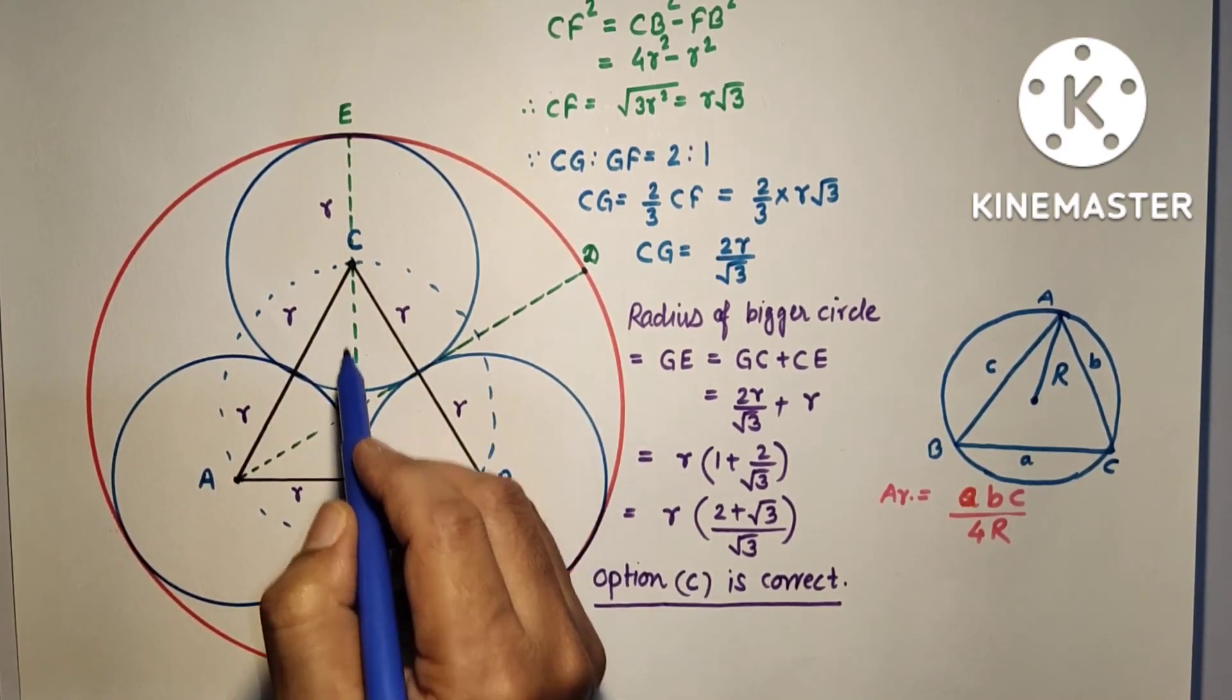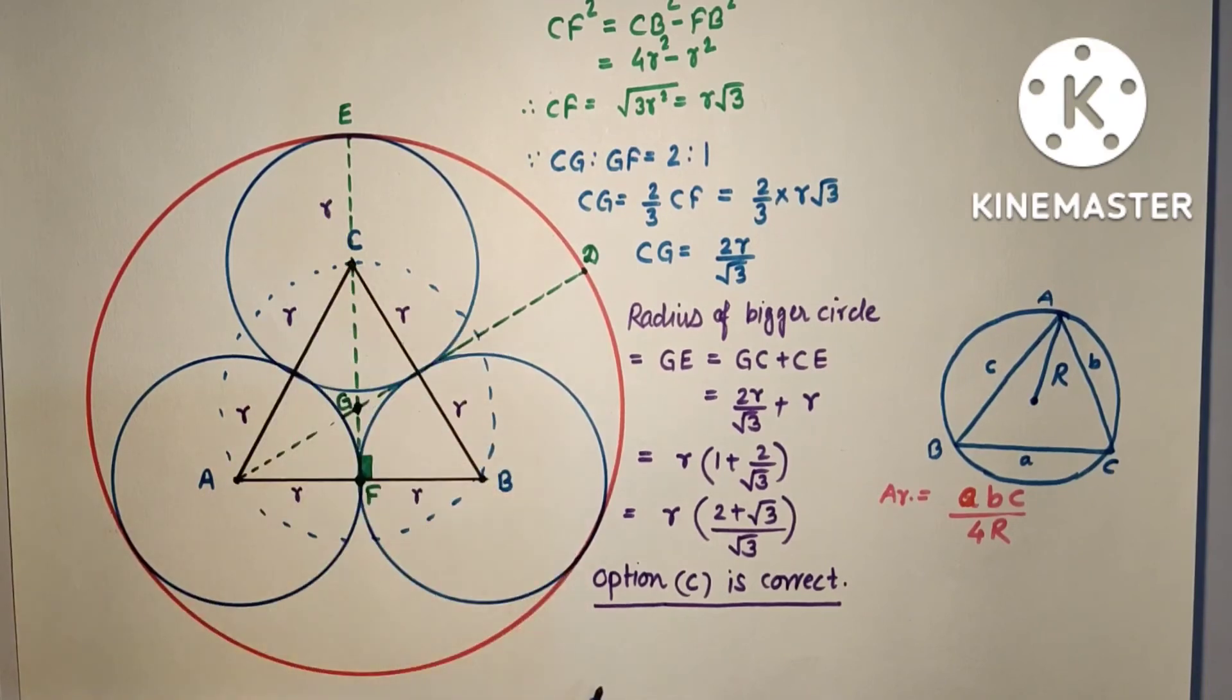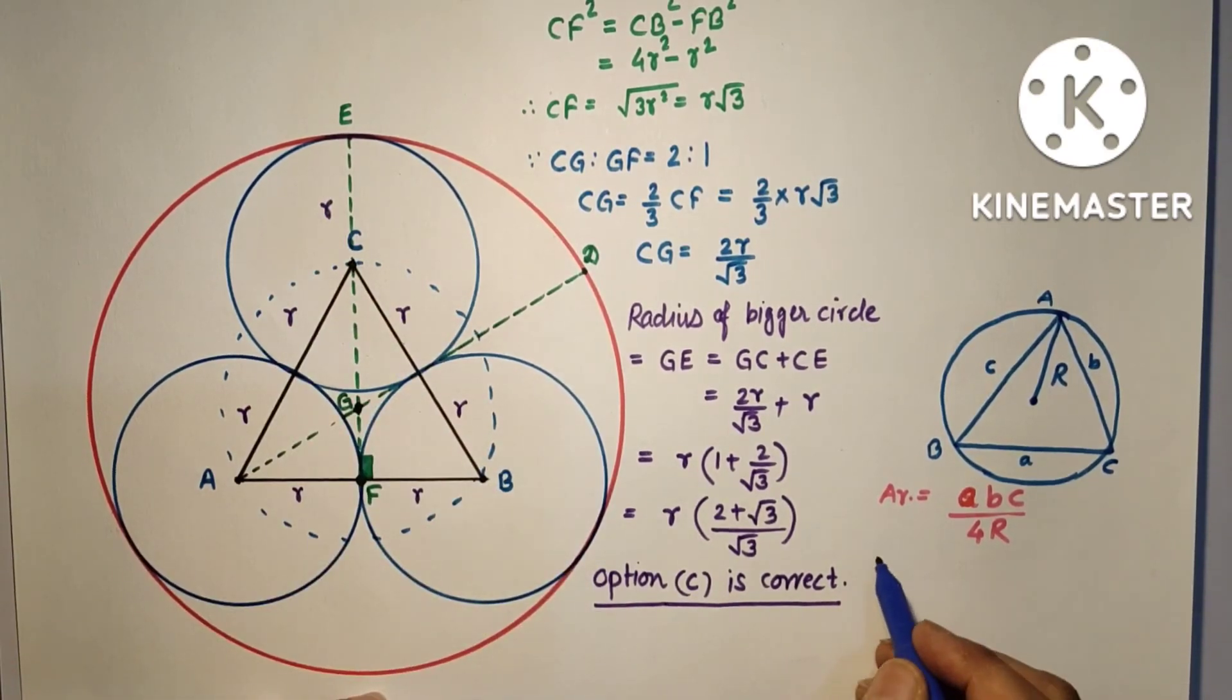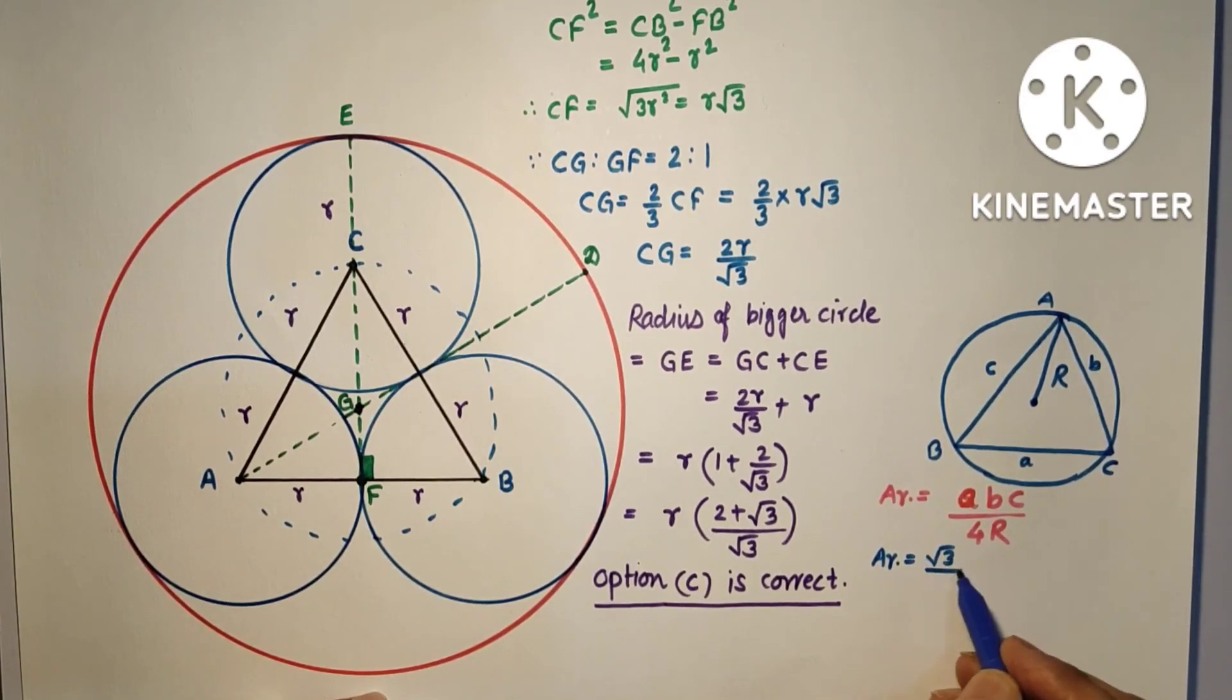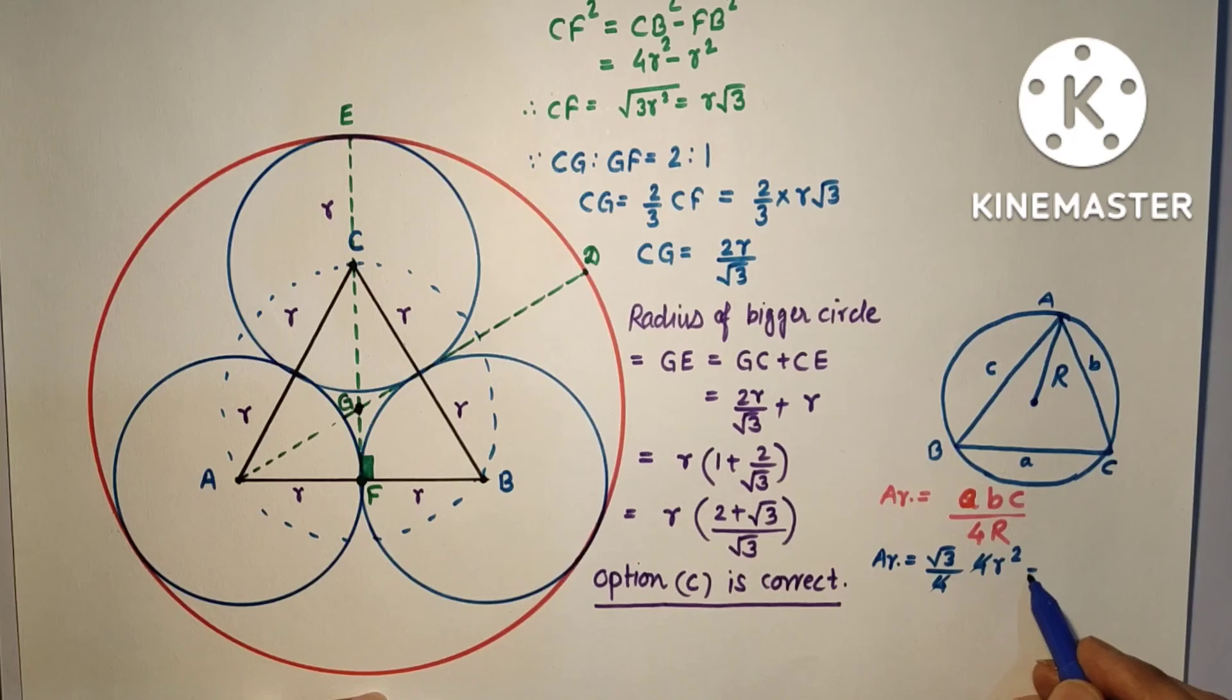√3/4 times side squared. Side is 2R, square of 2R is 4R², so 4 and 4 cancel, which is R²√3.